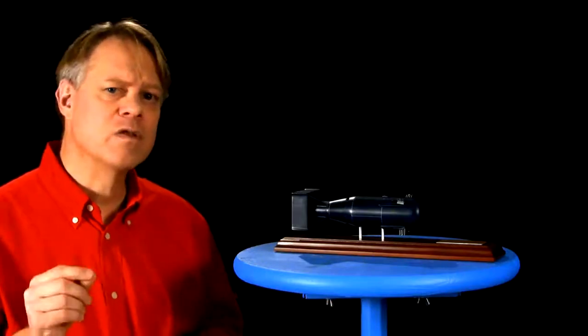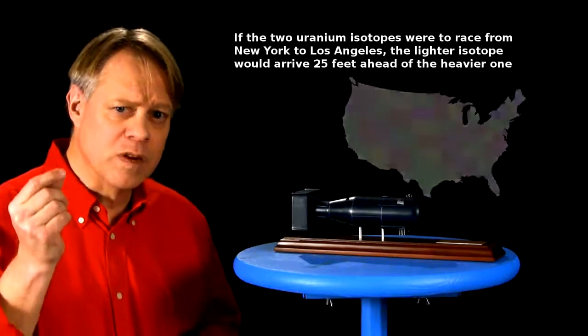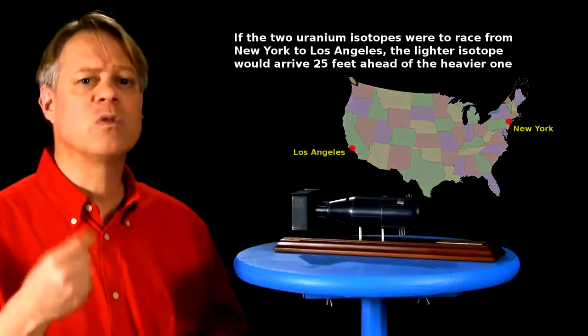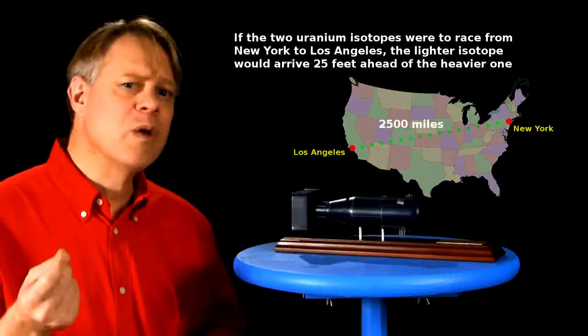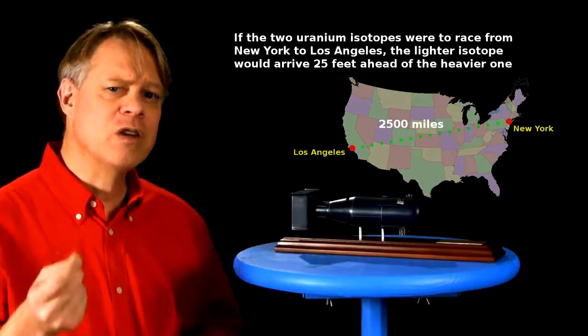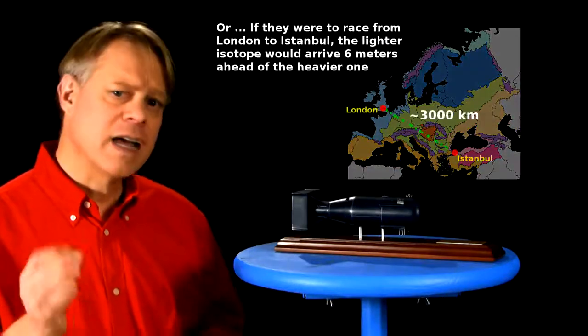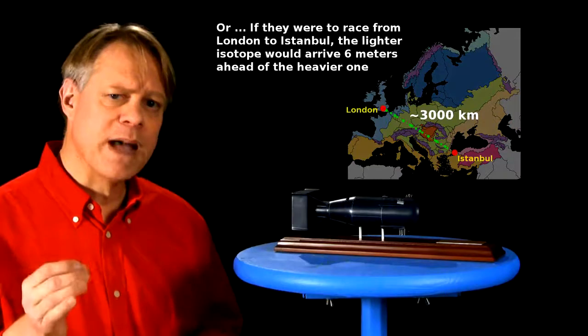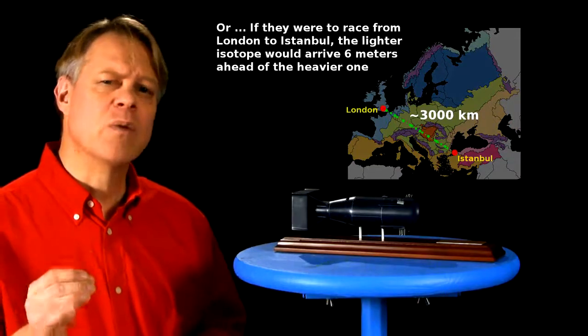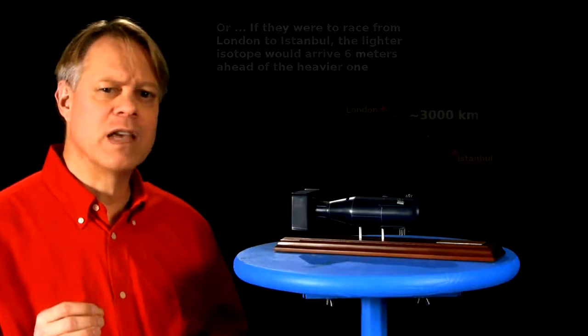That tiny weight difference means that the two isotopes will move at slightly different speeds when exposed to an equal force. To enrich uranium for the first atomic bomb, engineers built immense gaseous diffusion plants that capitalized on the differing speeds. A gas containing uranium flows through miles of piping in a kind of race where the lighter U-235 wins out.